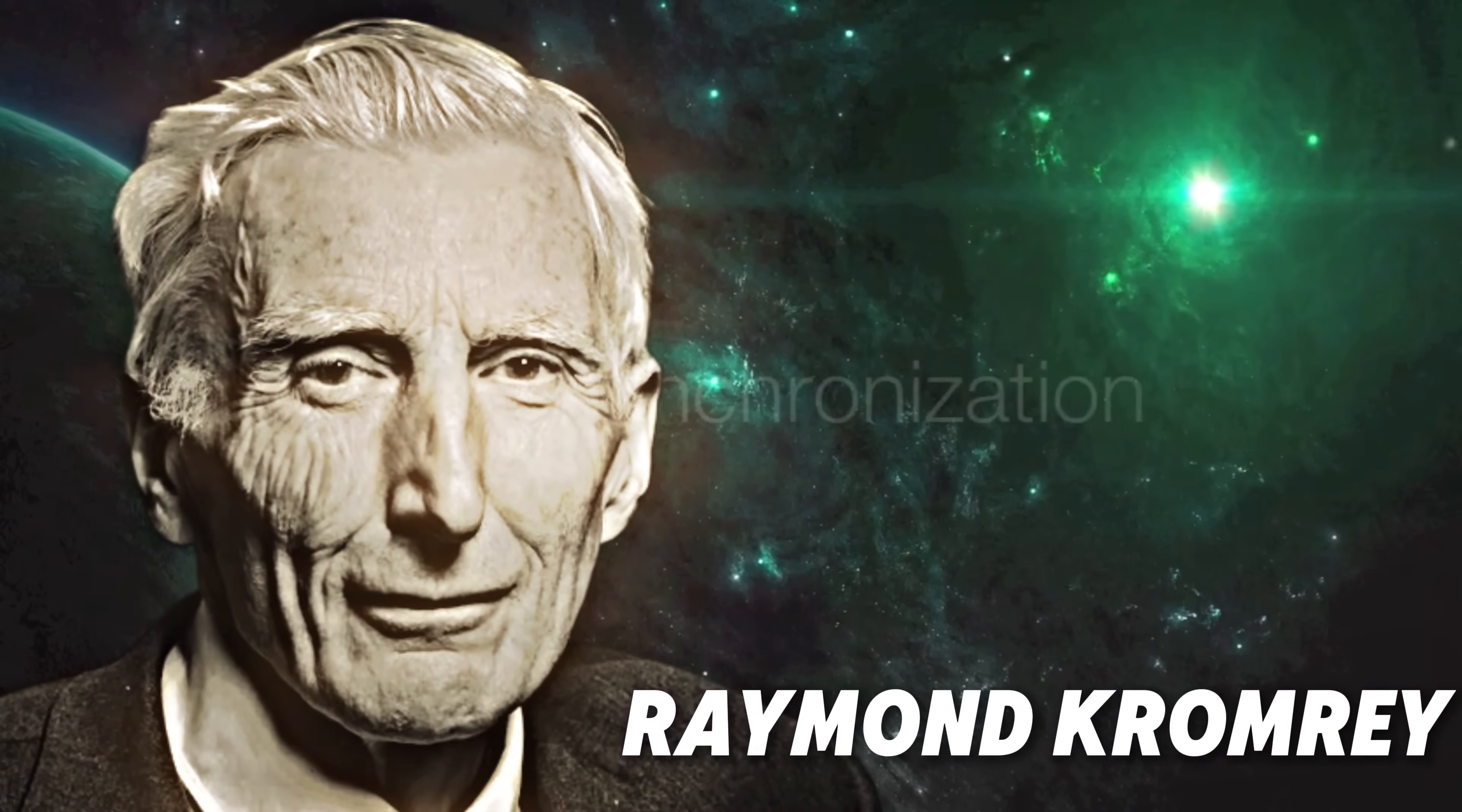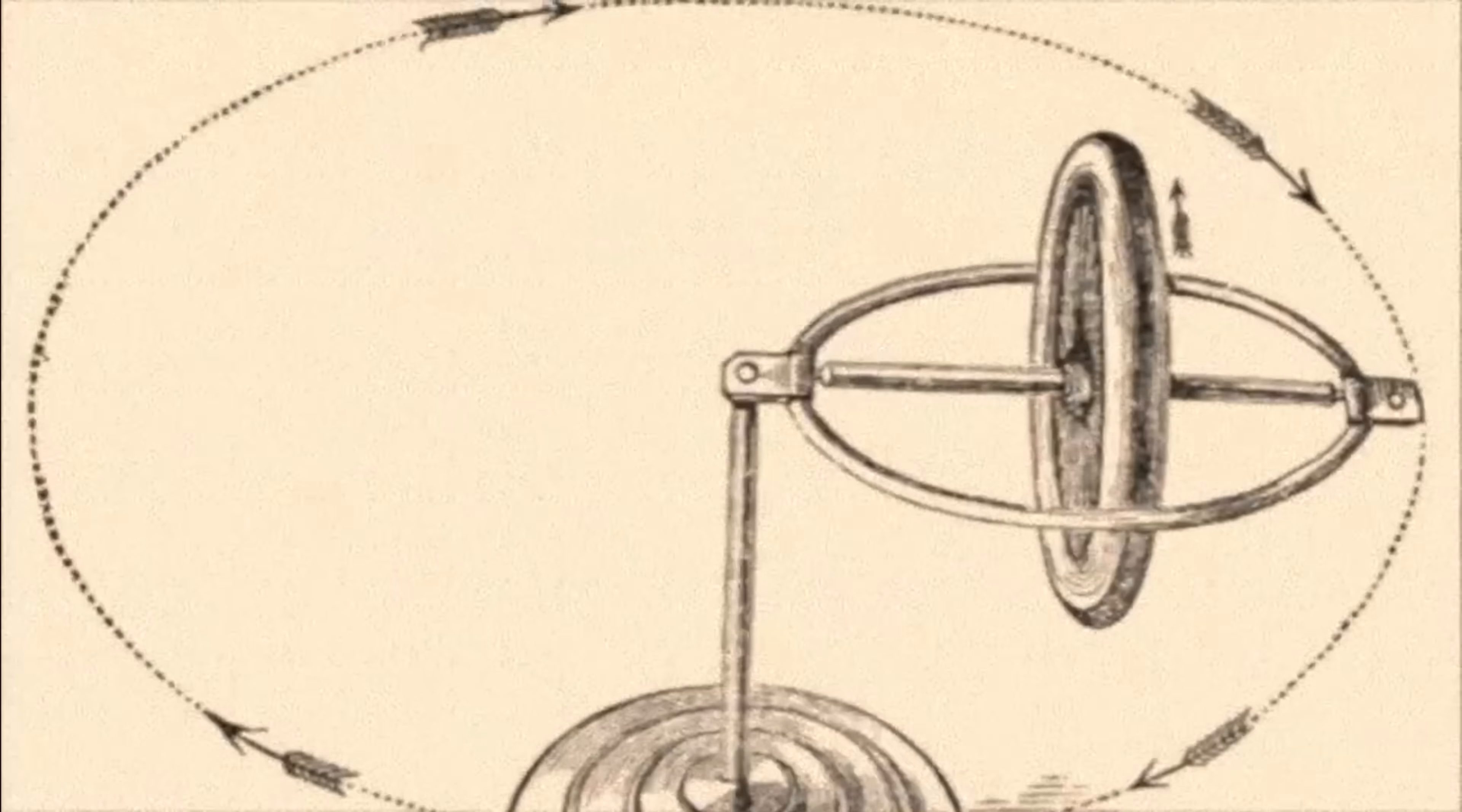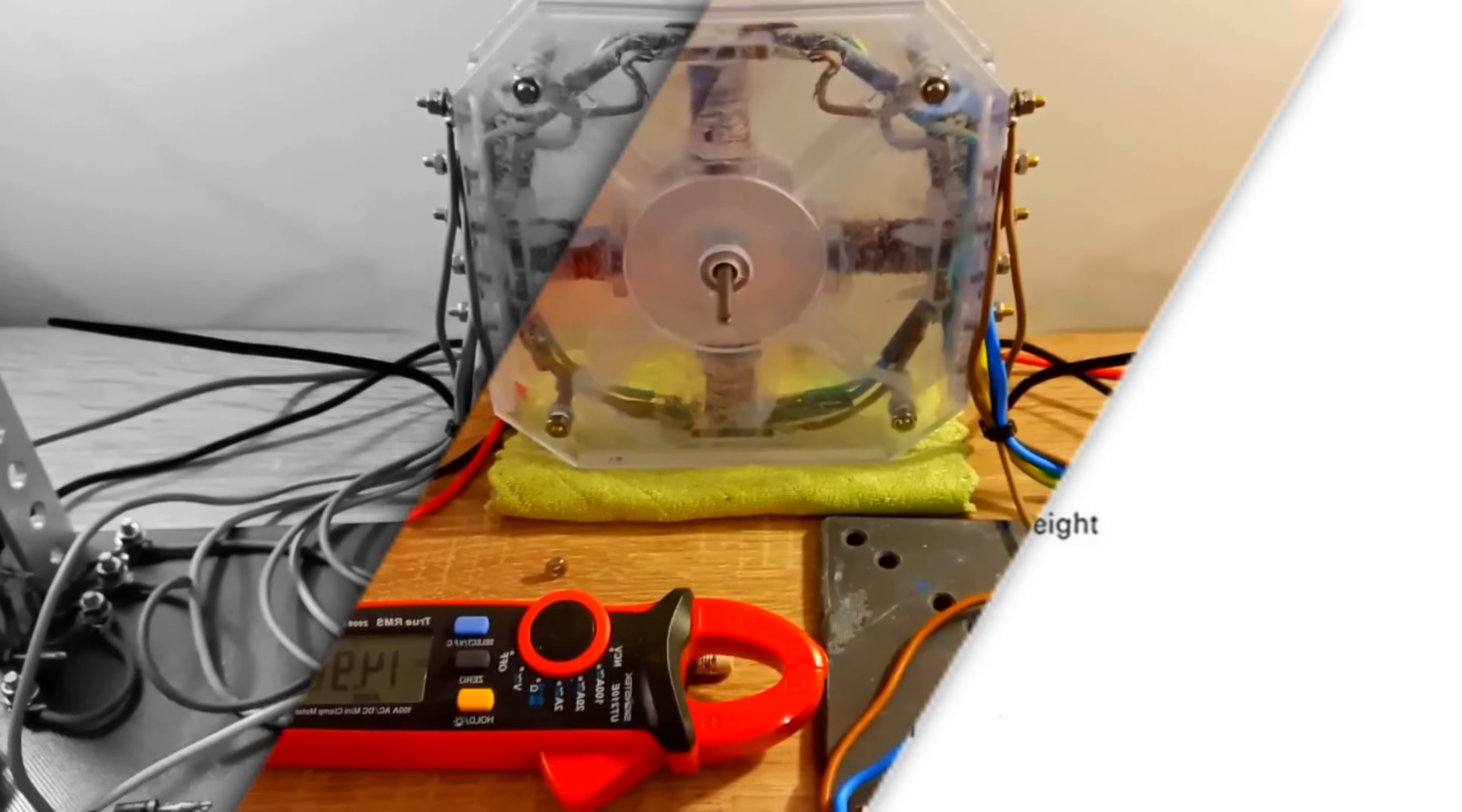Raymond Cromry is a visionary engineer and inventor who has dedicated his life to exploring the untapped potential of magnetism. Born in a small rural town, Cromry's fascination with the natural world and his unwavering curiosity led him on a journey of discovery that would ultimately change the course of renewable energy.